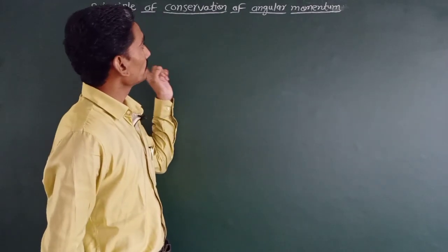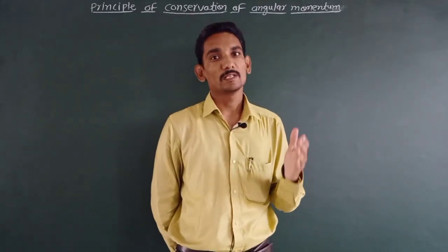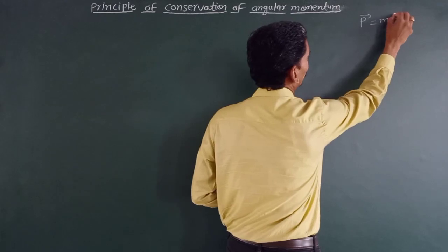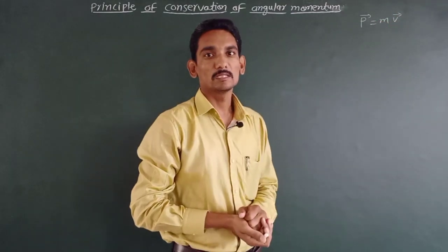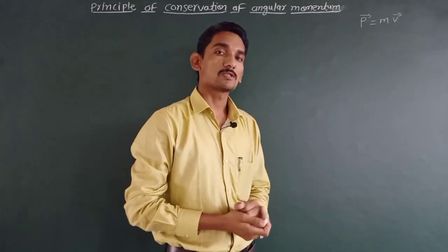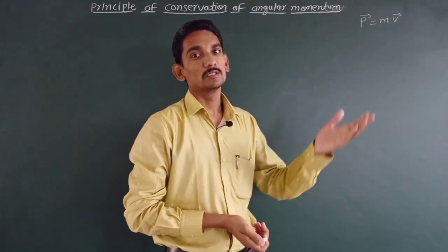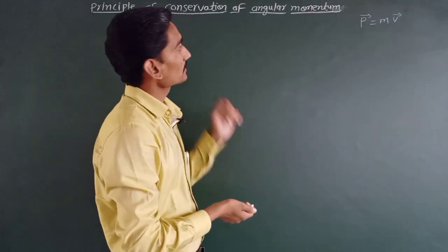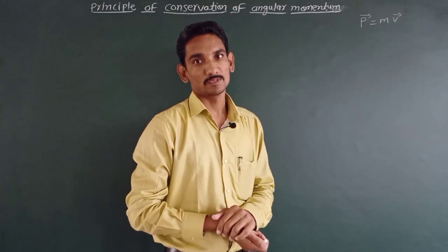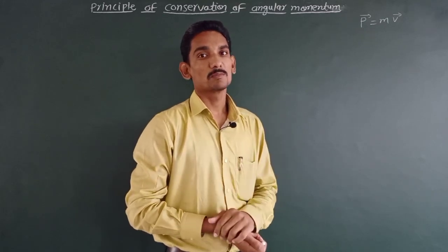But now we are going to discuss the conservation of angular momentum. In case of linear momentum, the formula is p vector equals m into v vector. For linear momentum we consider the external force acting on the body, because the external force is responsible for linear motion. But when we discuss angular momentum, the torque is responsible. When the body is performing rotational motion about its own axis of rotation, torque is the responsible factor.